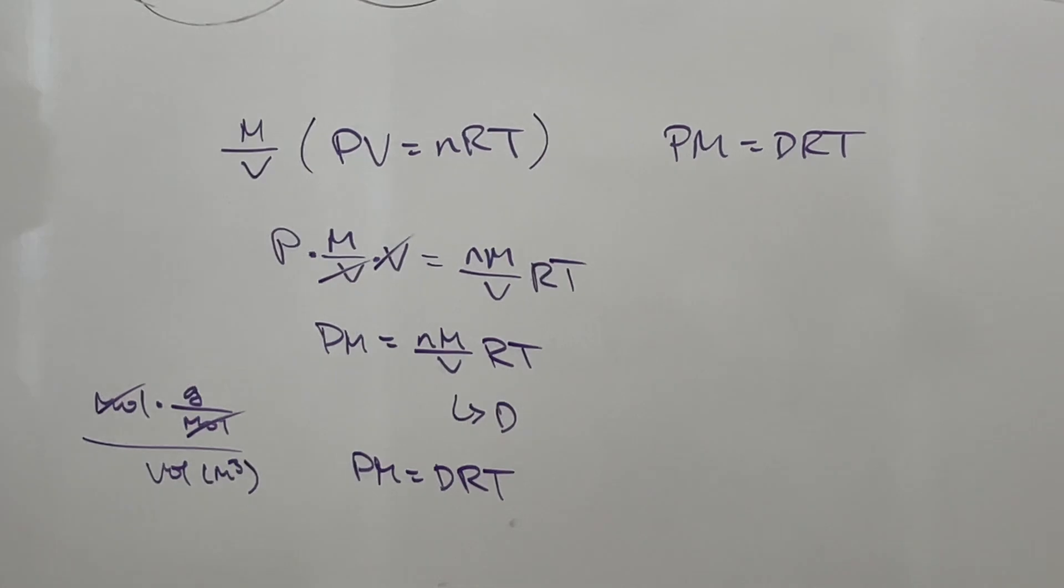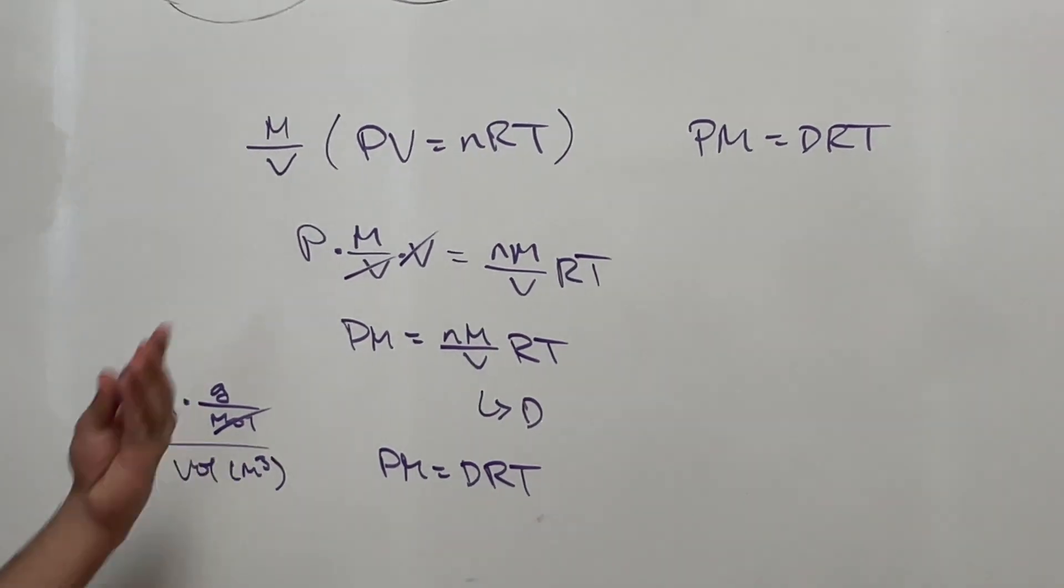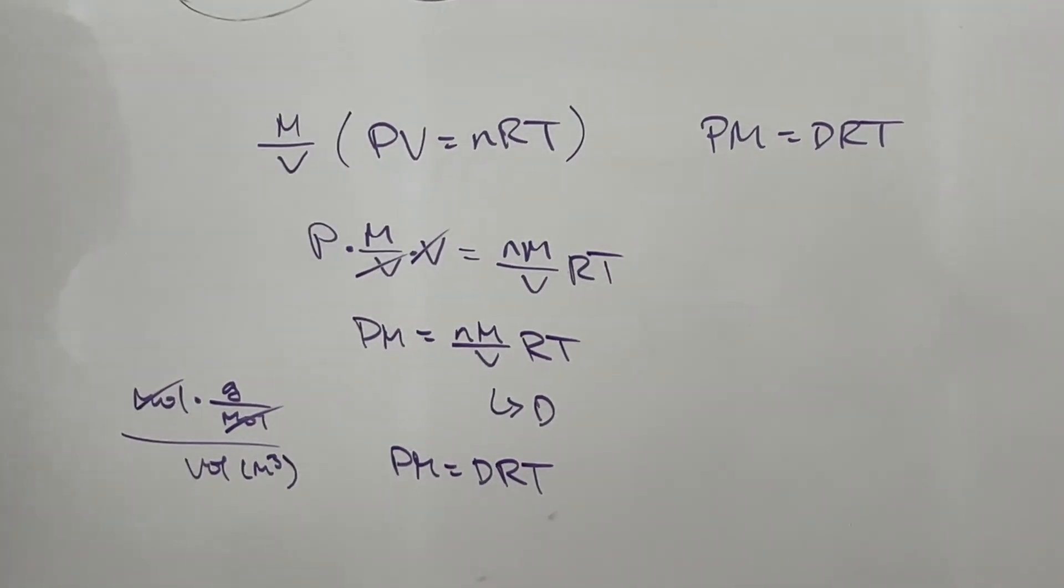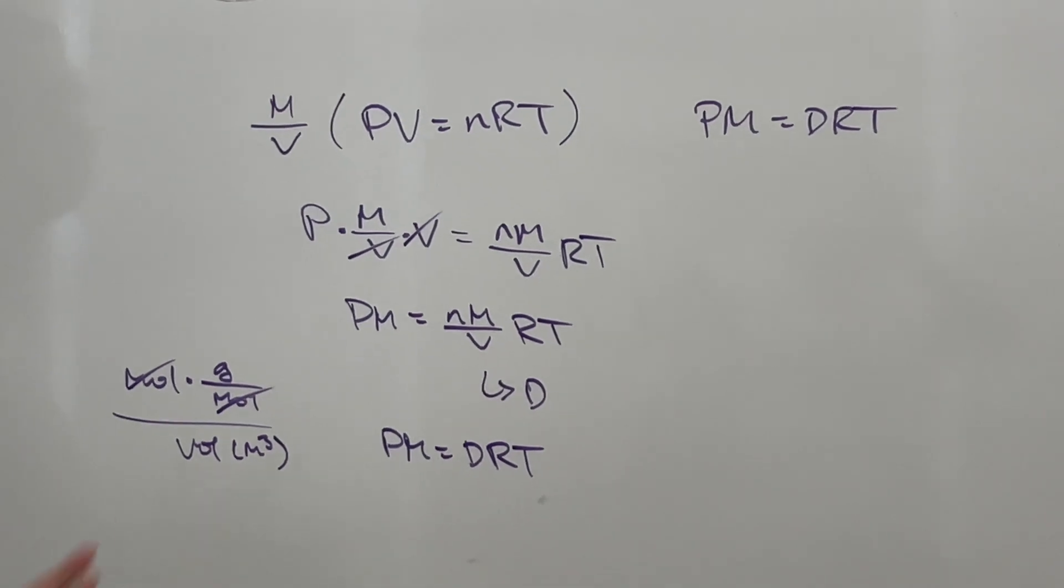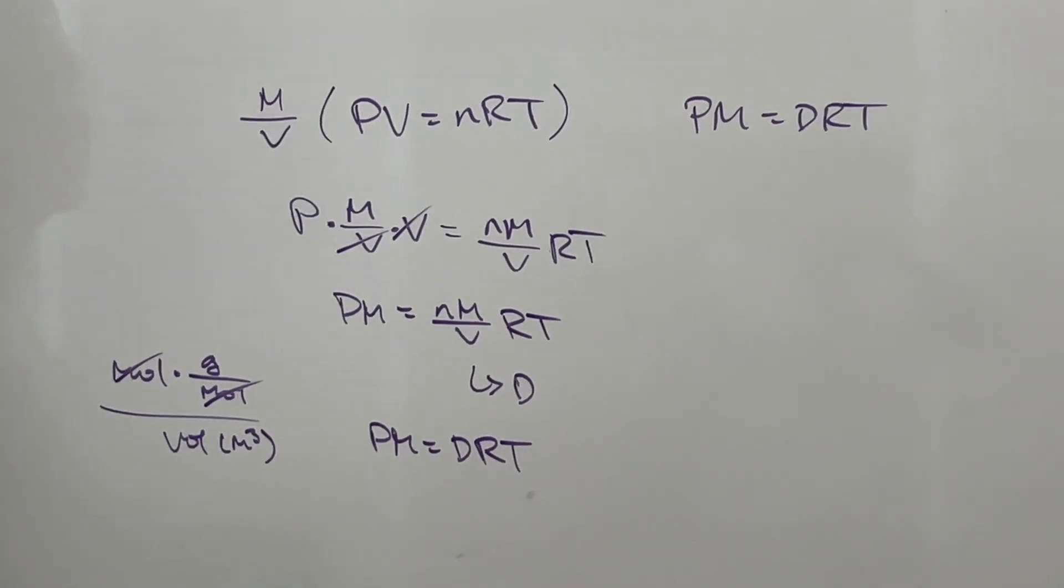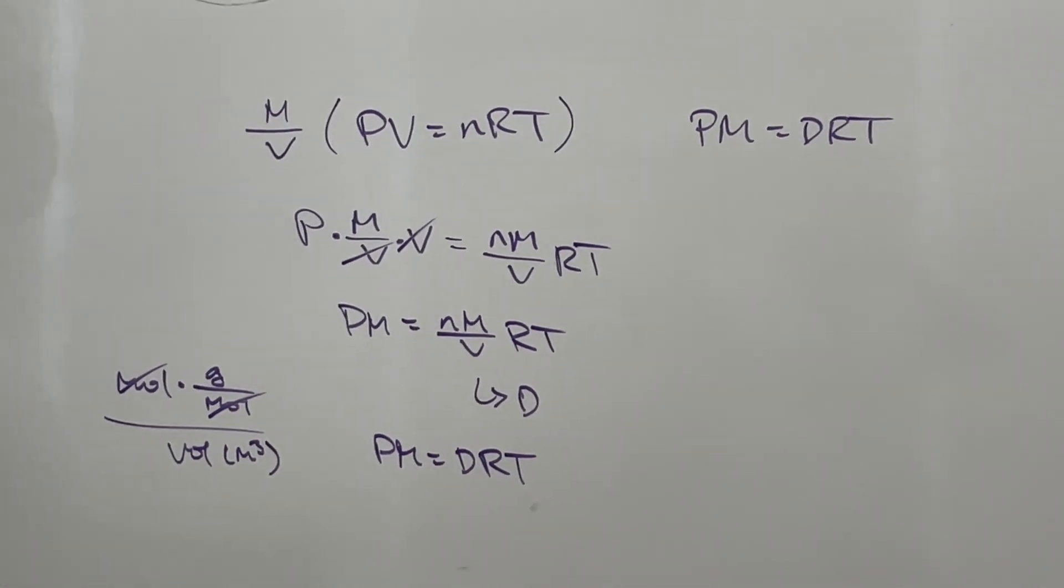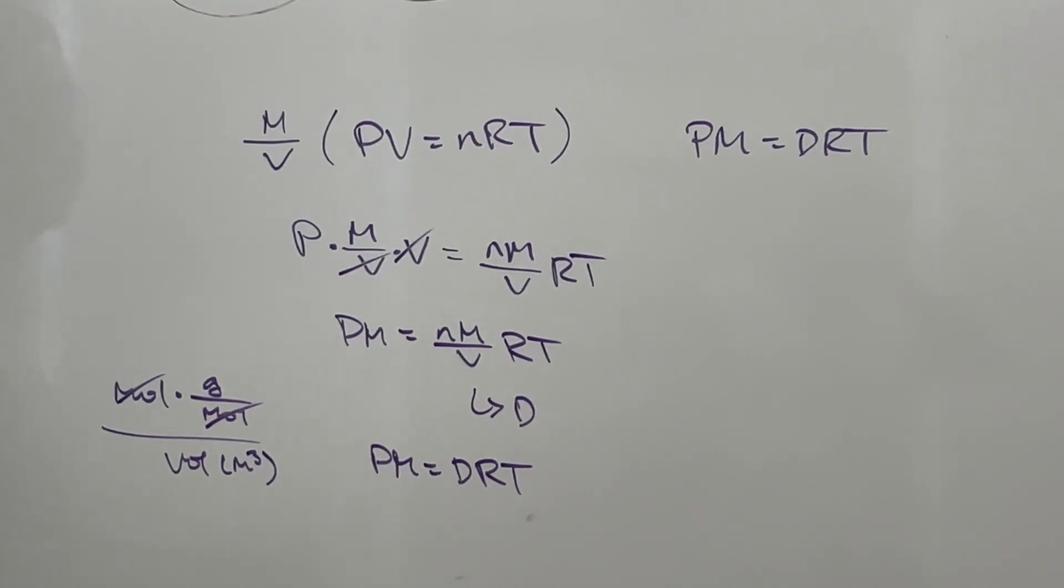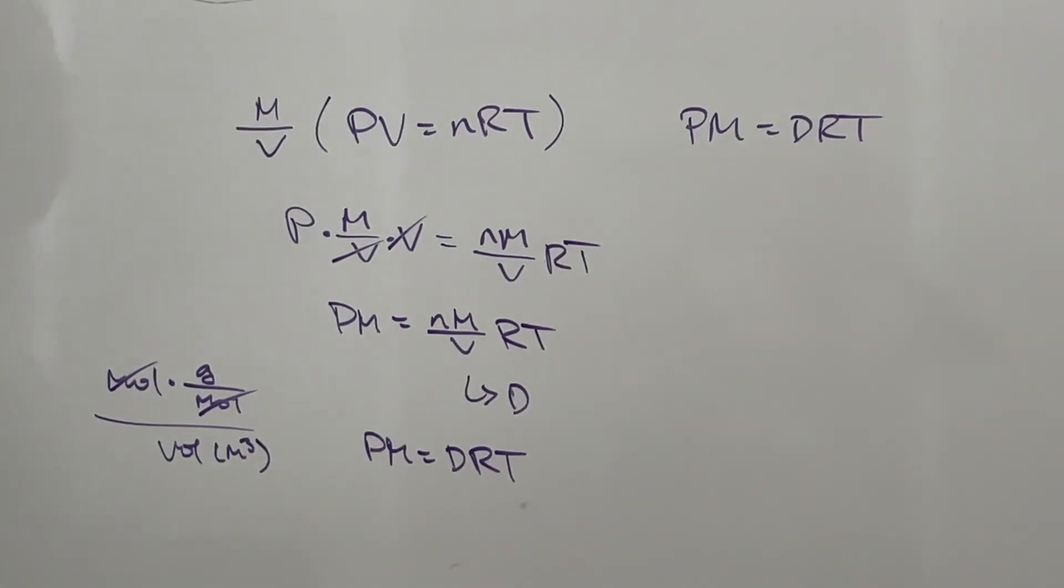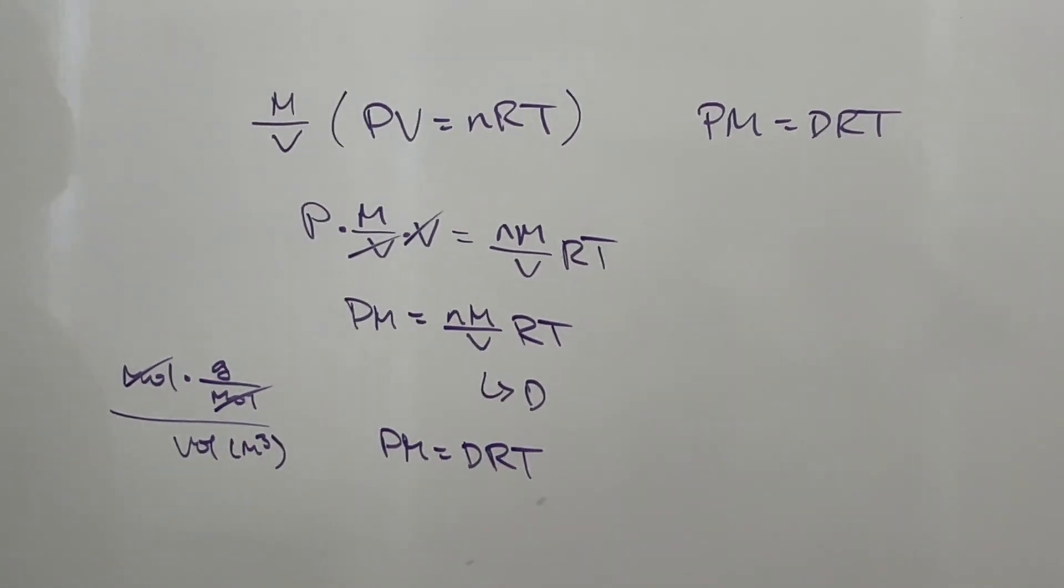Just multiply both sides of the ideal gas law by M divided by volume. So that's basically it. Pretty cool. This is also really useful, and yeah, stay tuned for more cool stuff like this.